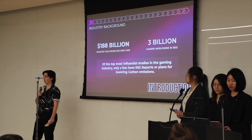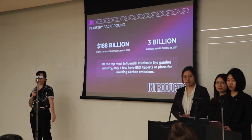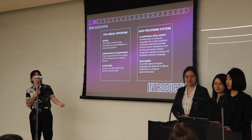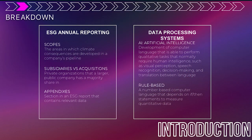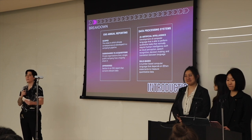AI-assisted collection, generation, and comparison of ESG data across industry stakeholders ensures that accurately reported progress leads to a more sustainable, future-proof economy. We're going to go over two big issues: ESG annual reporting and computer programming languages. Scopes are the areas in which climate consequences are developed in a company's pipeline. We're going to look at subsidiaries and acquisitions, which are private organizations that a larger public company has a majority share in, or an appendix — a section of an ESG annual report with relevant data. Lastly, we'll look at artificial intelligence, a computer programming language that deals with predominantly qualitative data, and rule-based coding, its counterpart that uses if-then number-based languages.